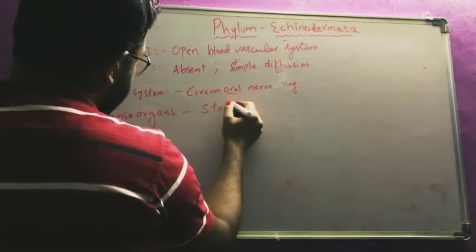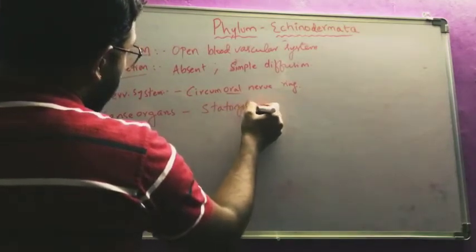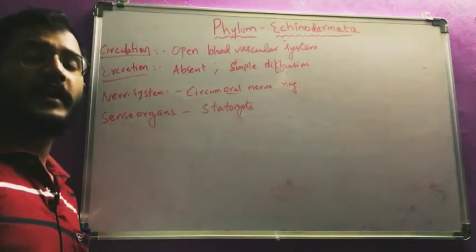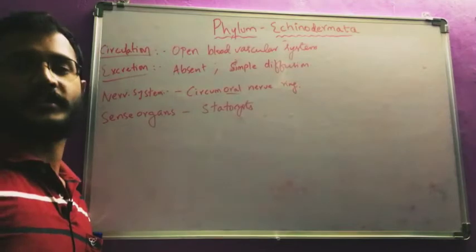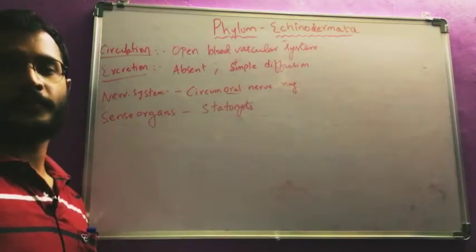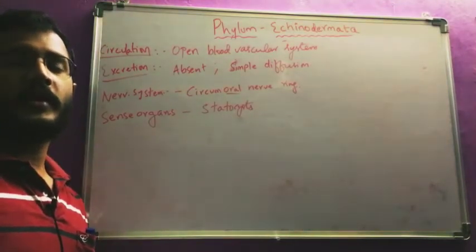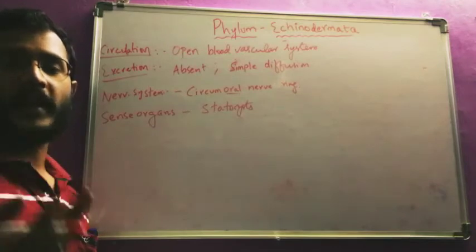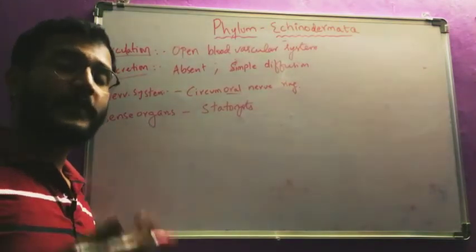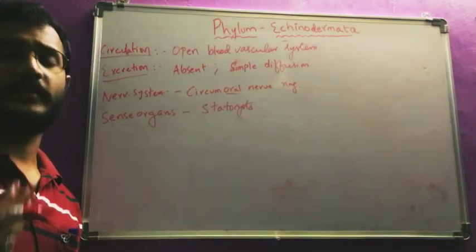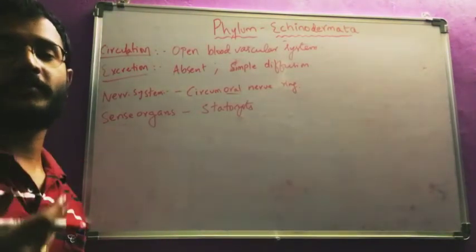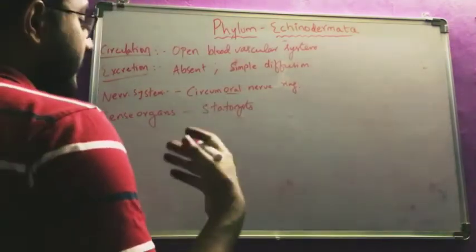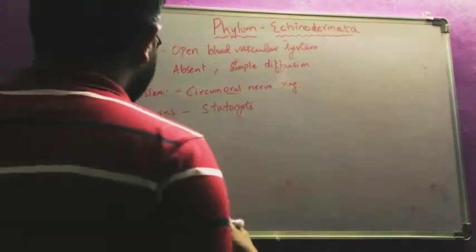The sense organs here are statocysts. It is important to know in how many phyla the sense organs statocysts are present, as exam questions may ask this. Options may include Annelida, Arthropoda, Echinodermata in one option, or Nideria, Ctenophora, Platyhelminthes in another option. You must note all phyla where statocysts are present.